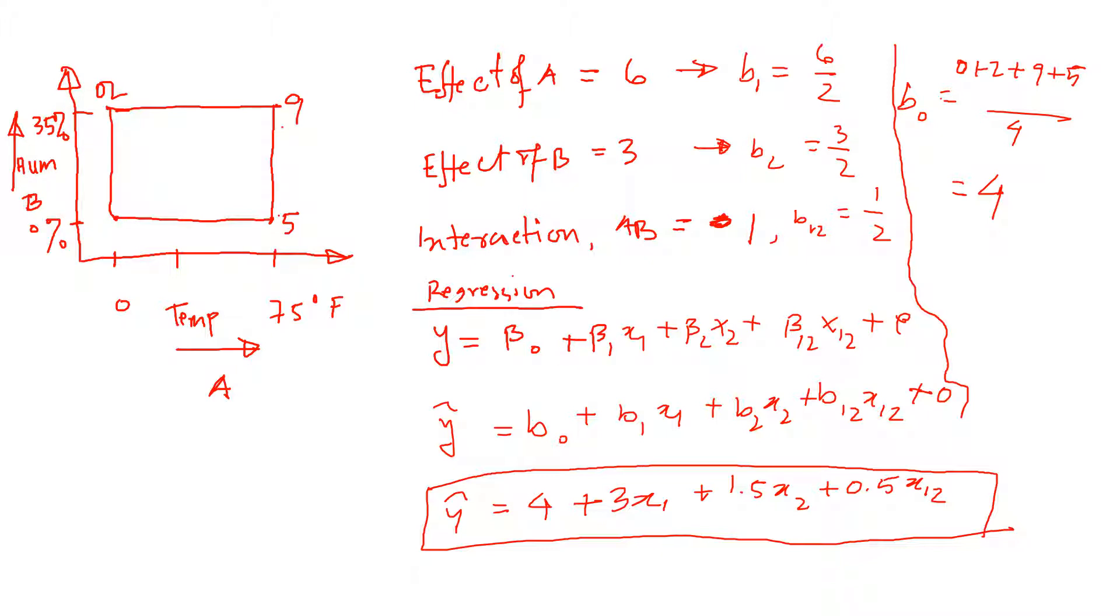in this case, beta 1 x1 plus beta 2 x2 plus beta 12 x1 x2 plus the experimental error.